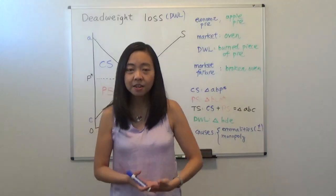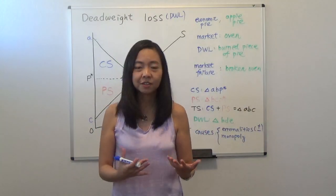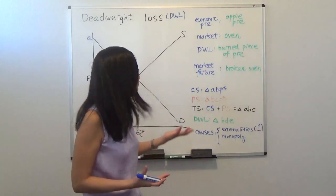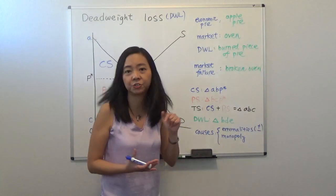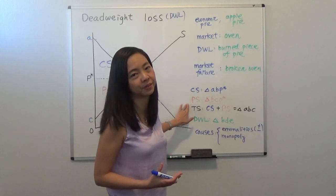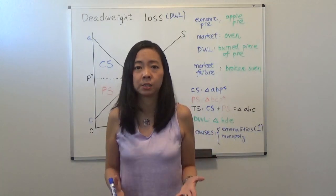So in our economy, our market is like an oven. We're using the market to bake an economic pie. And your economic pie really is just your sum of your consumer surplus and producer surplus. We want this pie to be as big as possible.